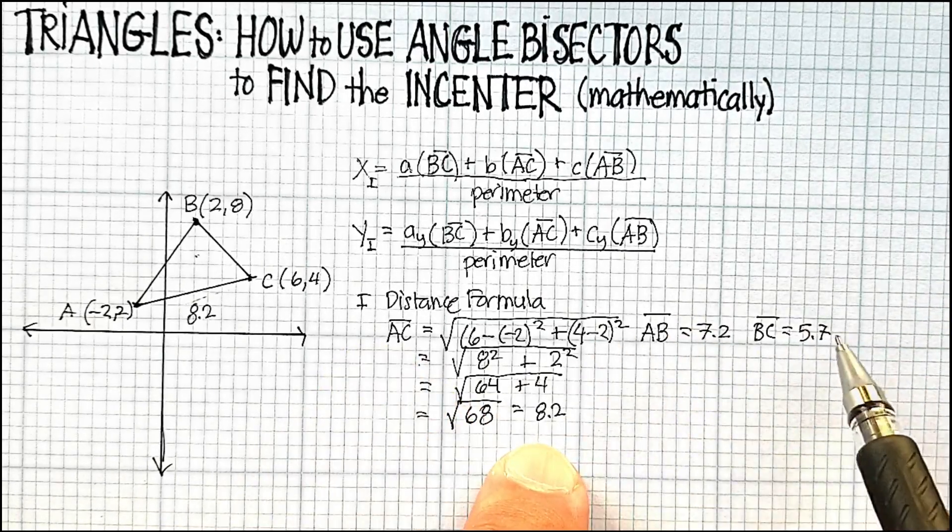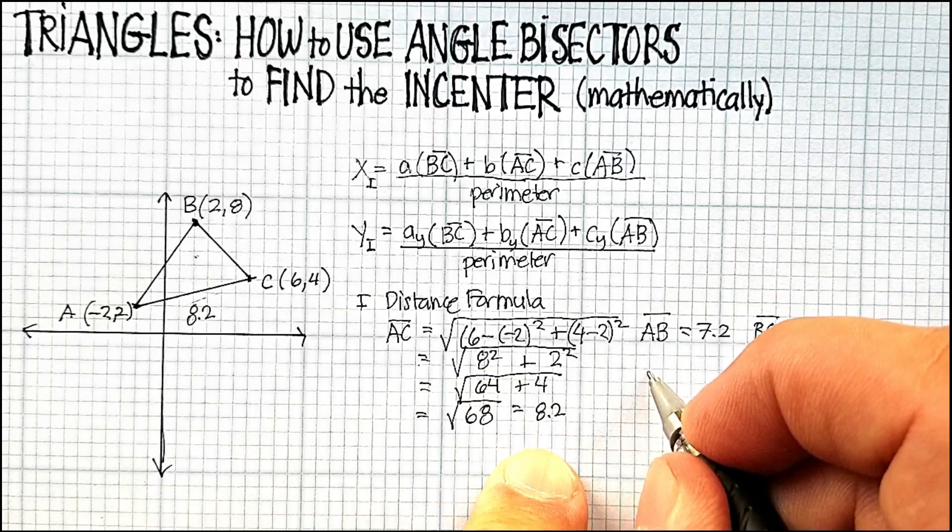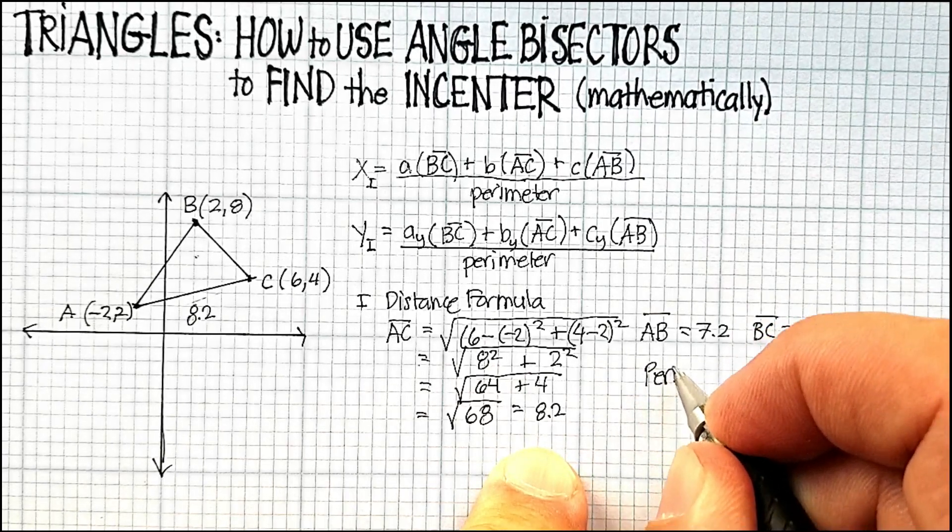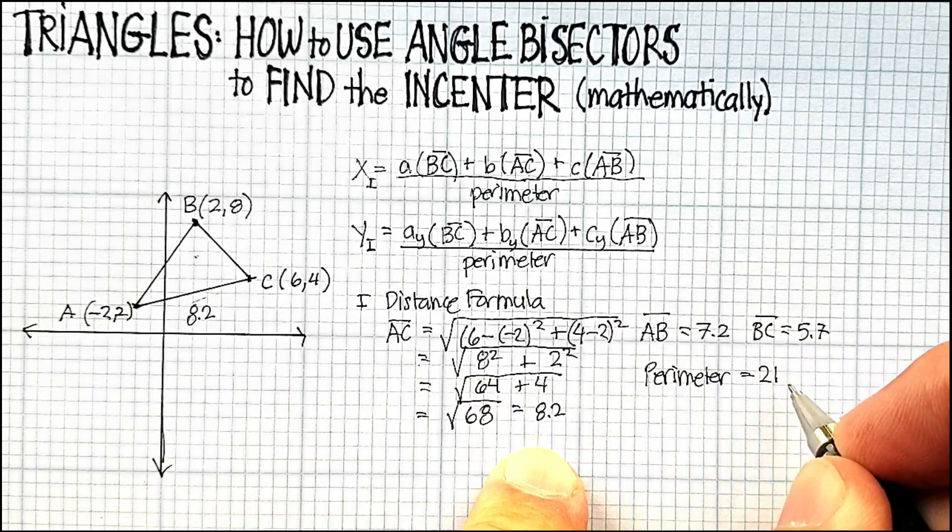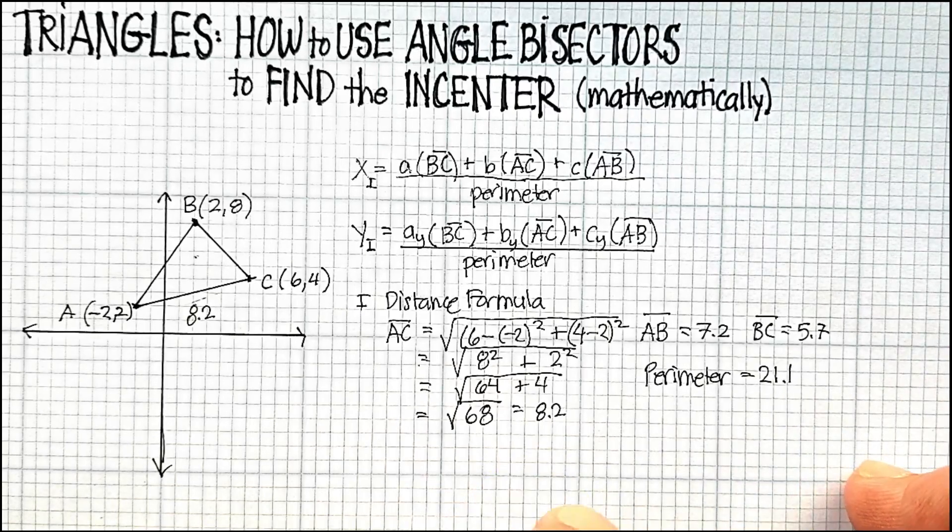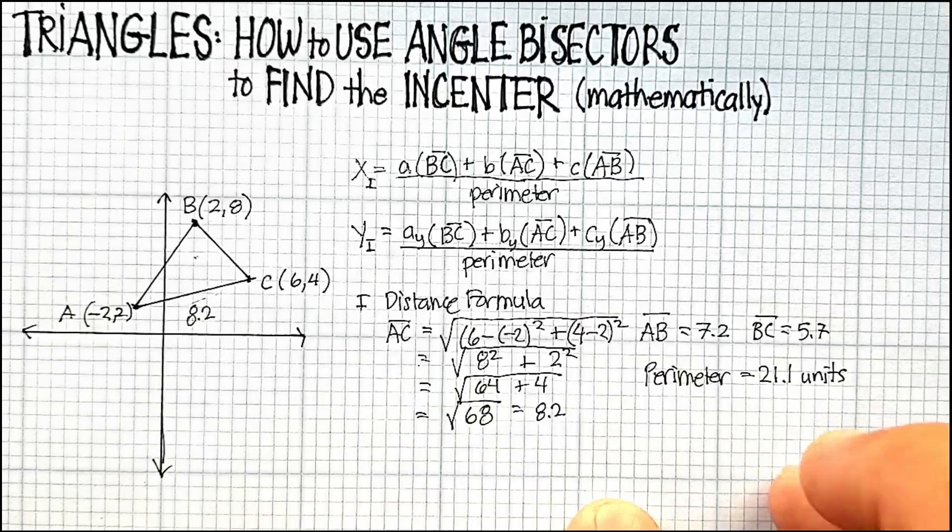When I added up all three of these distances, I got 21. The perimeter is equal to 21.1 units.